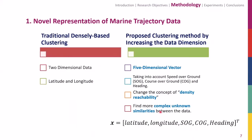First, let's talk about the proposed definition of the data input. The research increased geospatial data dimension before clustering because we do not want latitude and longitude to be the only attributes considered when clustering. We extend the data dimension into a high-dimensional vector, also taking into account SOG, COG, and heading, so the clustering algorithm can find more complex and unknown similarities between the data.